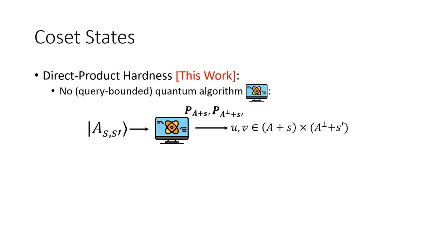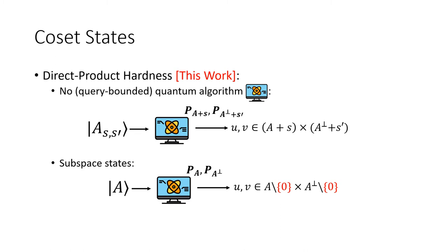For convenience, we refer to two programs as the membership checking programs for cosets: P_{A+S} and P_{A-perp+S'}. Coset states also satisfy the direct product hardness property: for any query-bounded quantum algorithm given a single copy of a coset state, even with oracle access to both membership checking oracles, it cannot find two vectors in both cosets. Unlike subspace states, we do not require vectors to be non-zero, because the secret vectors S and S' replace the role of zero vectors, and finding S or S' is also hard.